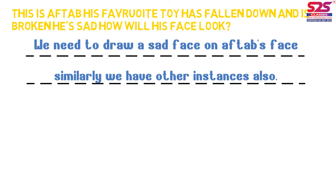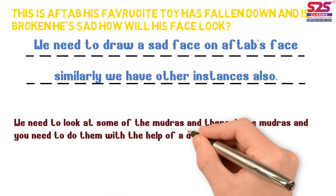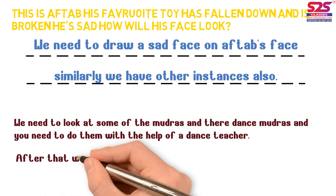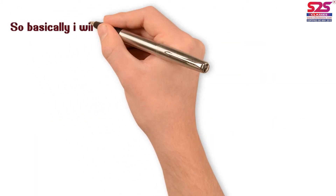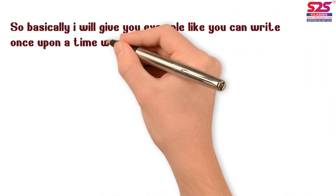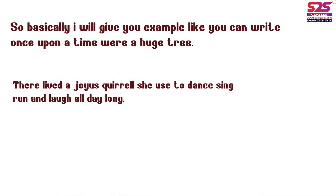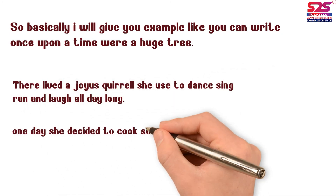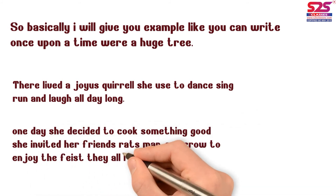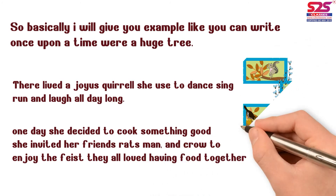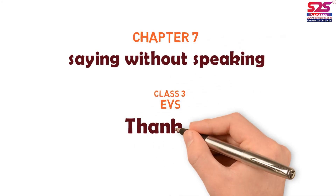Next, you need to look at some dance mudras and perform them with the help of your dance teacher. After that, there are pictures and you need to make your own story and discuss it with your friends. For example: 'Once upon a time, on a huge tree there lived a joyous squirrel. She used to dance, sing, run, and laugh all day long. One day she decided to cook something good and invited her friends — a rat, a hen, and a crow — to enjoy the feast. They all loved having food together.' This is how you can make a story. We are done with the chapter — I hope it is clear to you. Thank you!